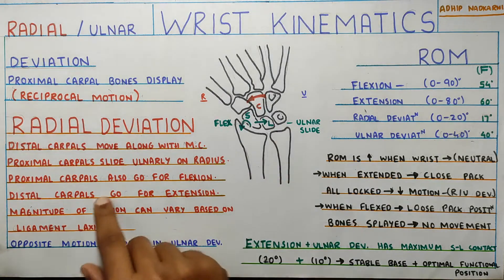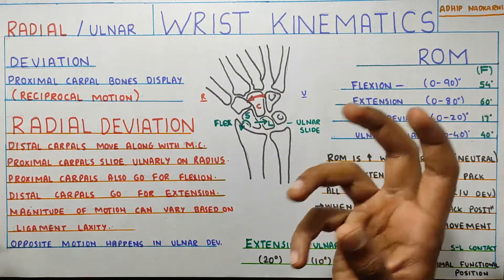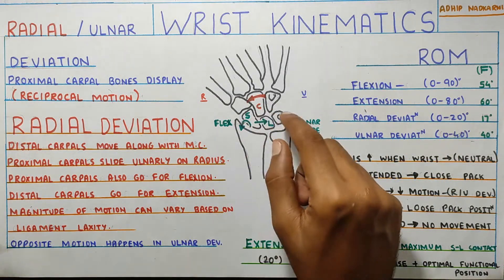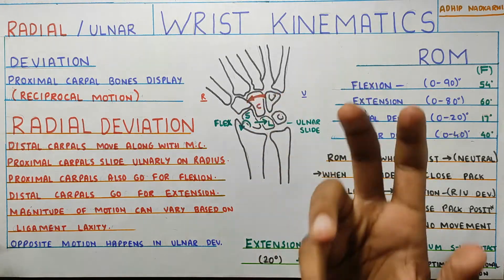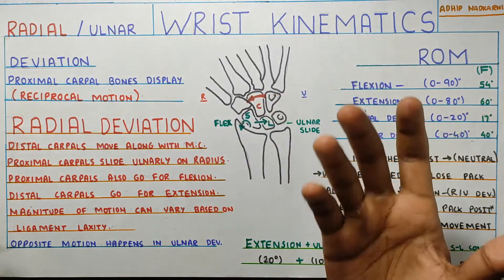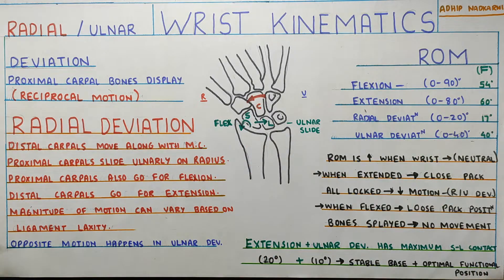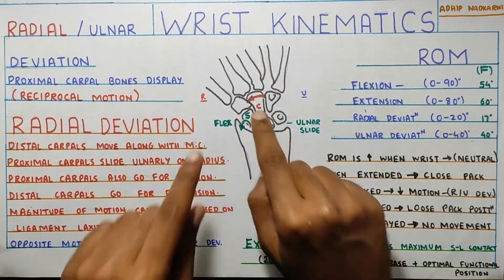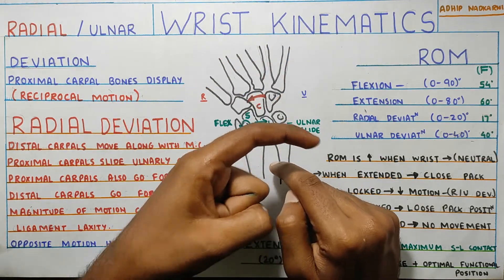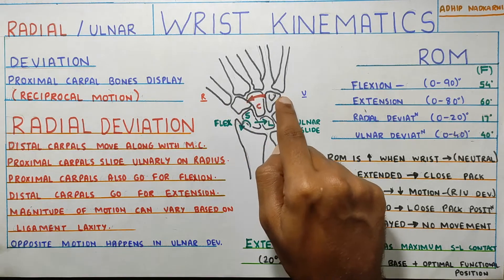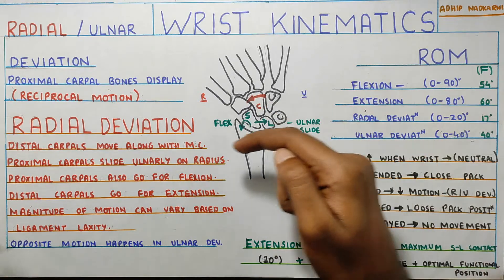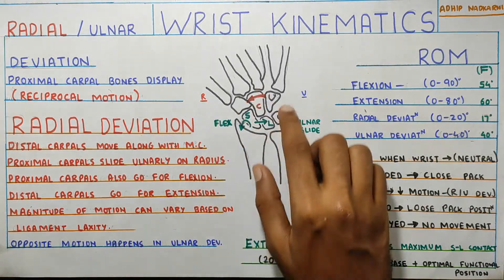The magnitude of motion in the carpal bones can vary based on ligament laxity — how taut your ligaments are determines how much the bones move. Normally, females have slightly more ligament laxity compared to males, so movement varies accordingly. The exact opposite motion occurs in ulnar deviation: the distal carpal bones move in the ulnar direction and go into flexion, while the proximal carpals move radially and into extension.